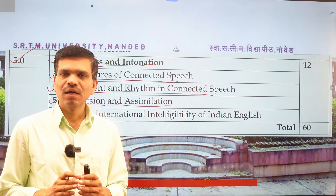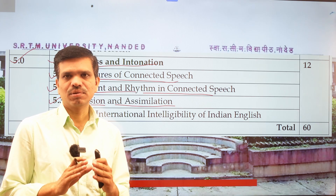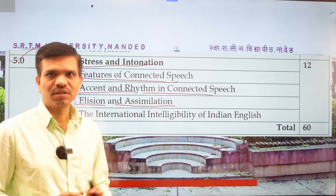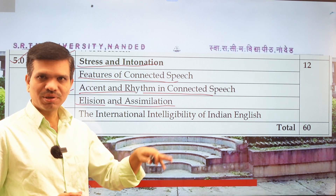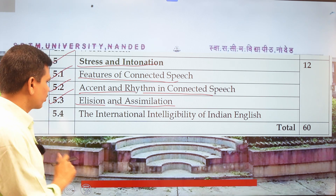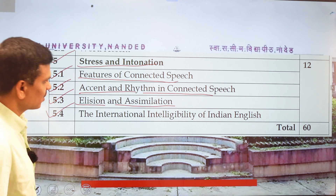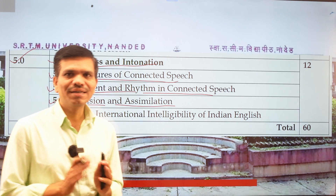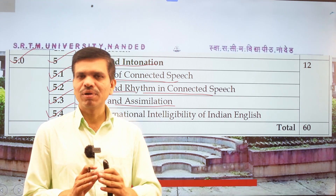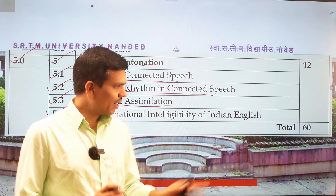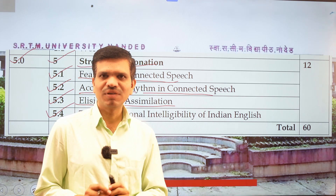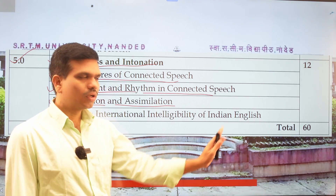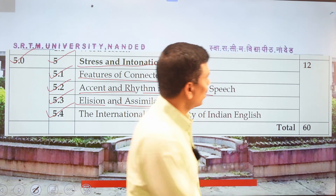Point 5.3 covers elision and assimilation — two terms of great importance in language study. The last point of the last unit is the international intelligibility of Indian English: how Indian English has gained popularity worldwide, the features of Indian English, and how Indians are using English.